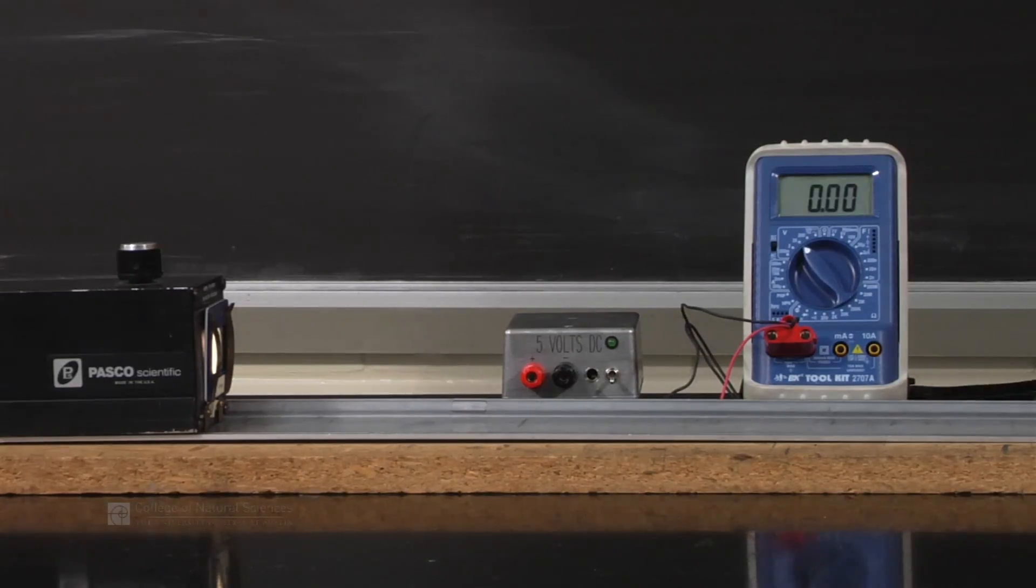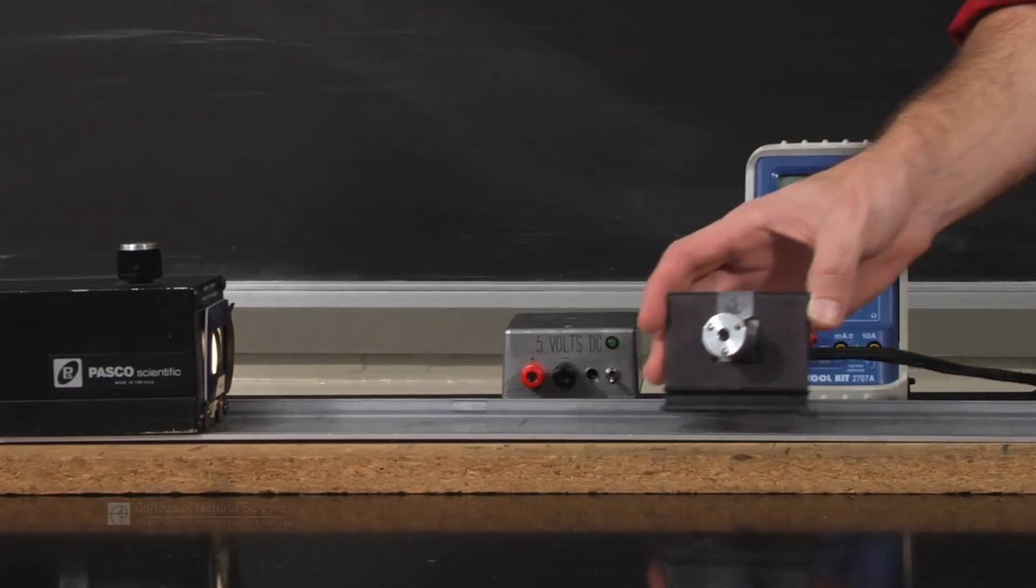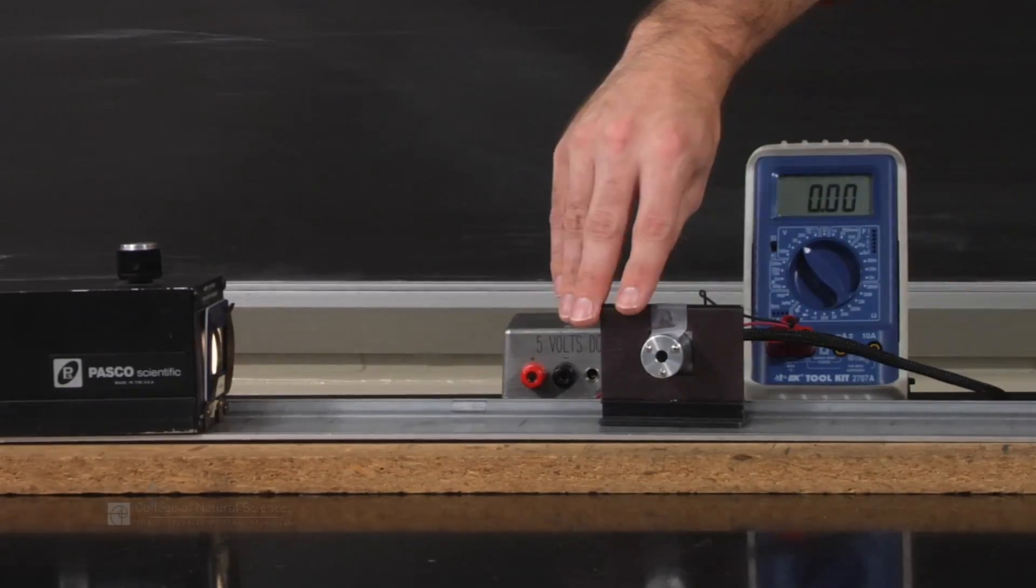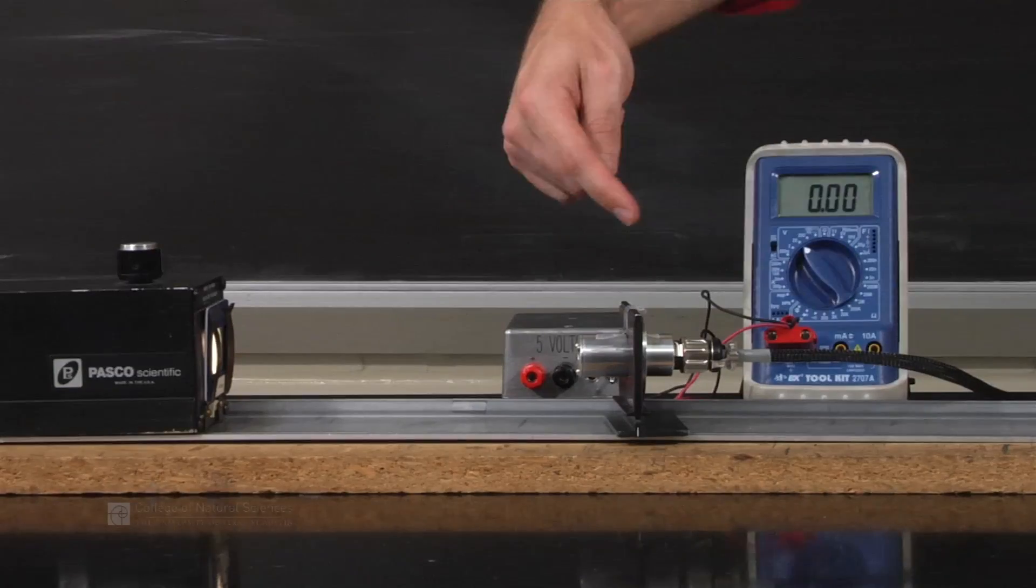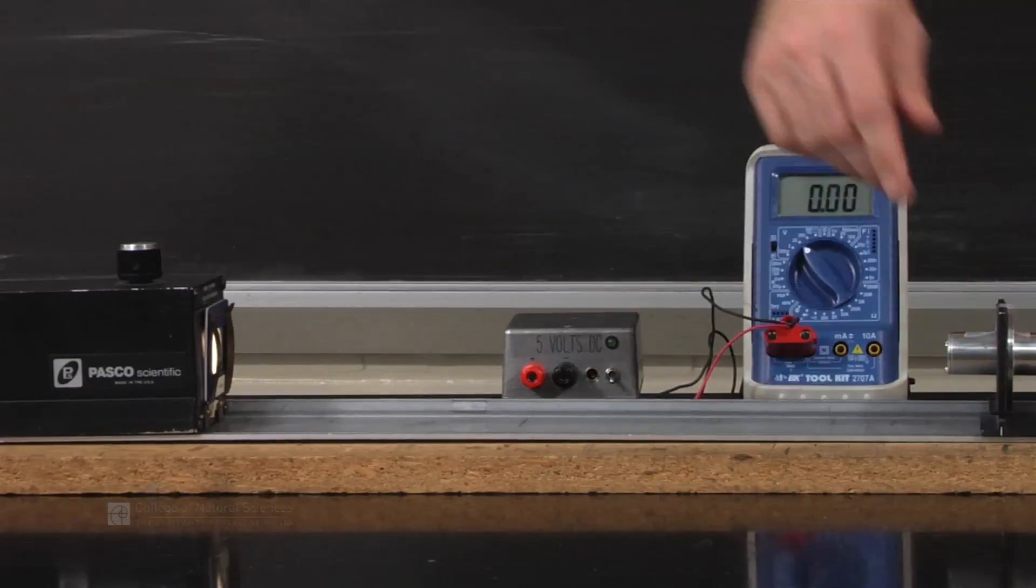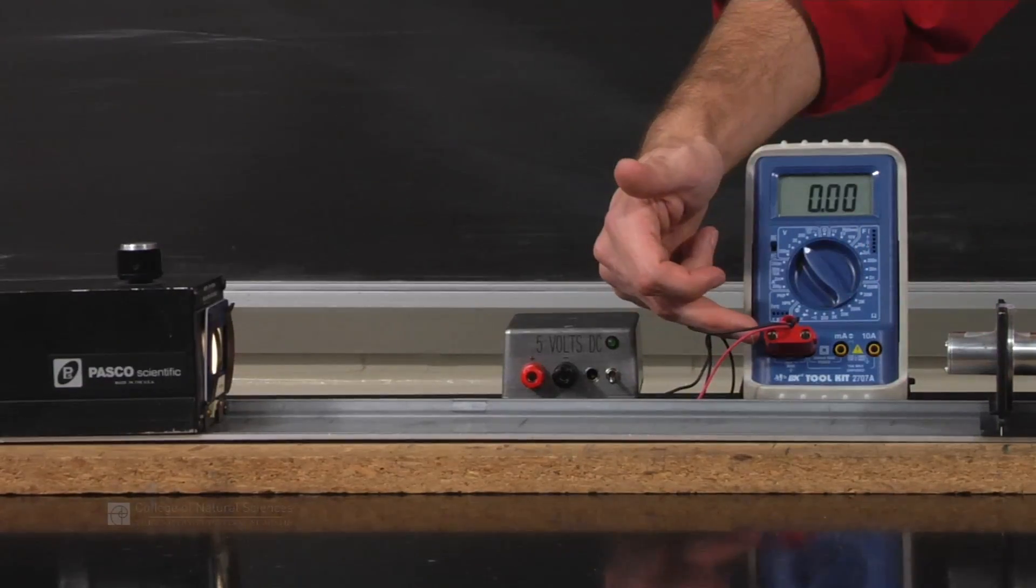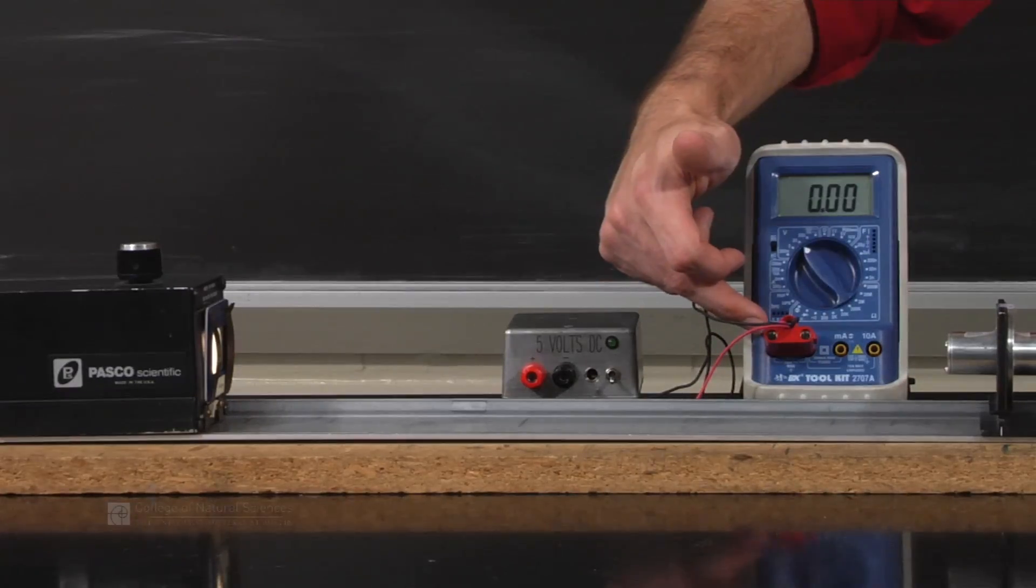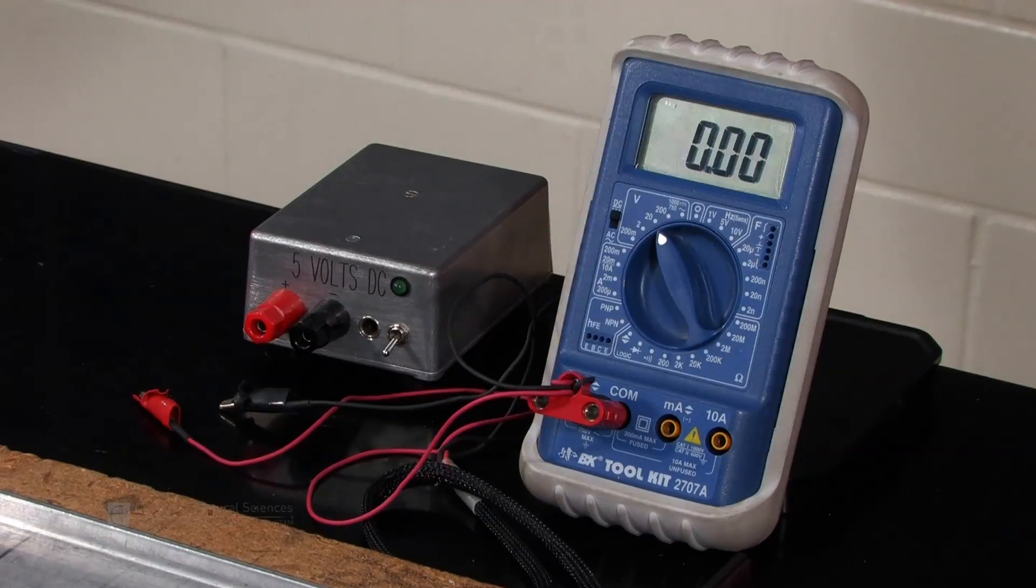The first thing we're going to set up is our detector. Instead of using our eye, we're going to replace our eye with this wonderful little device called a photodiode. The photodiode has a cord that's attached. We can see that the cord I have attached to our voltmeter, our DMM, is set to voltage and our COM port. It's set to a DC voltage.